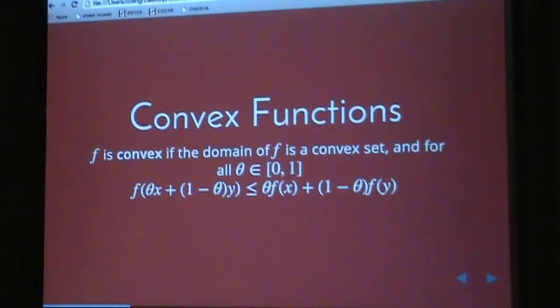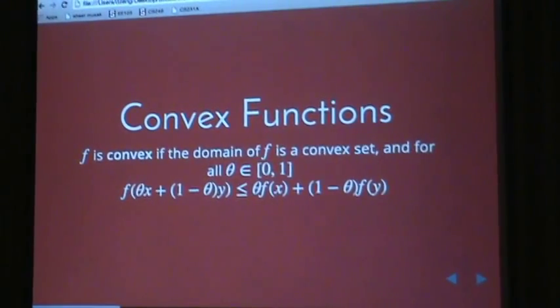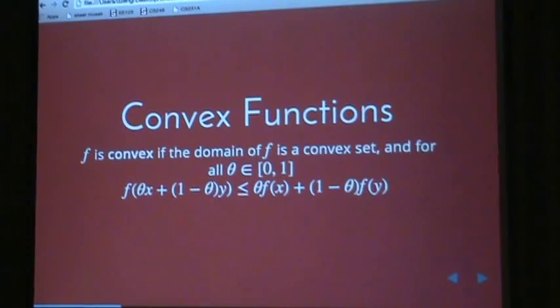Hopefully we've convinced you that convex optimization is pretty cool. So we'll go through a little bit of the math in terms of how convex solvers and things like that work. We'll start with just a few basic definitions. A convex function, as a lot of you probably know, is a function where the domain is a convex set. What that means is if two points are in the set, then the segment between them will also be in the set. And for theta in zero to one, f of theta x plus one minus theta y is less than theta f of x plus one minus theta y.